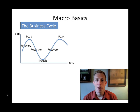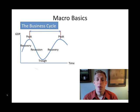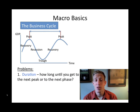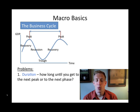We measure business cycles from one peak to the next. Business cycles are a useful tool — they show us that the economy naturally has ups and downs — but there are some problems. One of those problems is that the business cycle has different durations of phases. How long a recovery is differs for every business cycle, and how long a recession is varies as well. Think of the recession in 2007–2008 versus the Great Depression — a couple of years versus over a decade of recession.